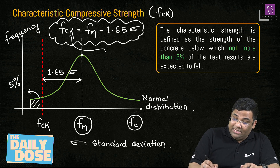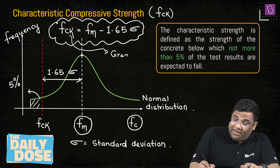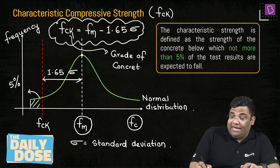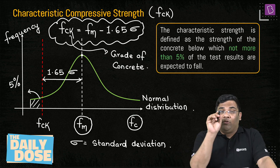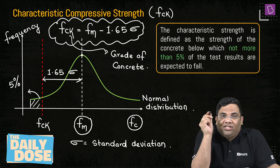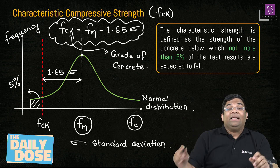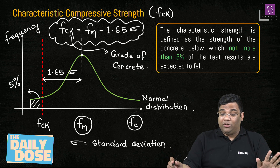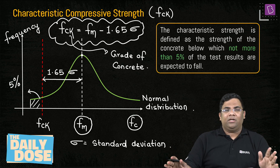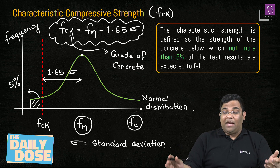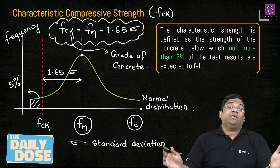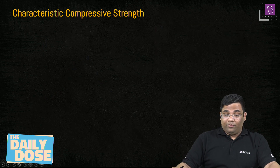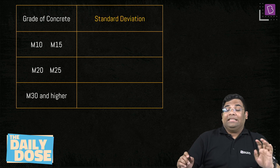This characteristic strength is also known as the grade of concrete. When we hear M20 grade or M30 grade, that number — 20 or 30 — is the characteristic strength FCK. We can define characteristic strength as the strength below which not more than 5% of test results are expected to fall.